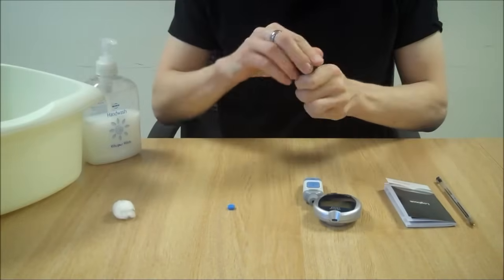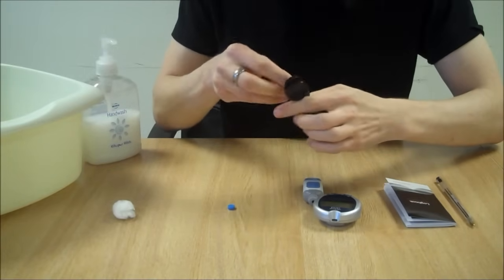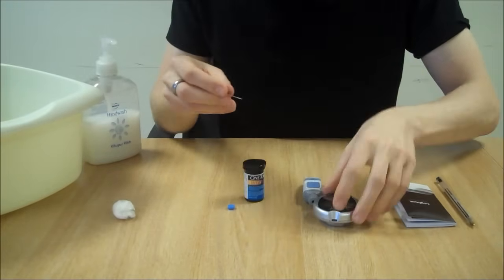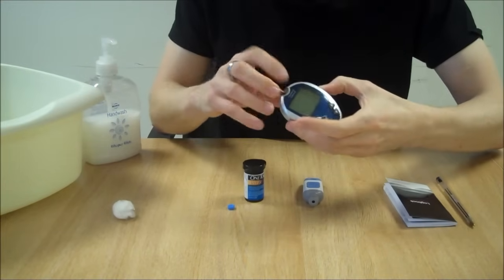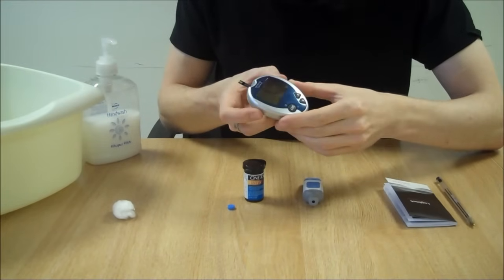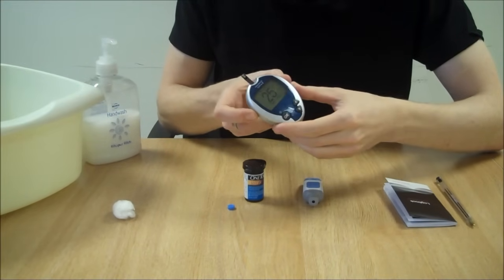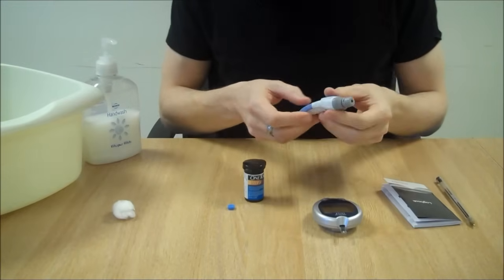Load a test strip into the blood glucose meter. This one switches on as you put the test strip in.